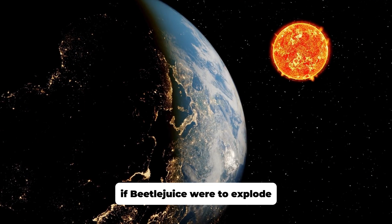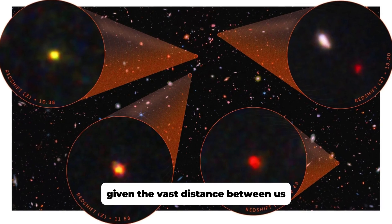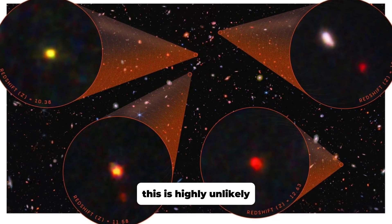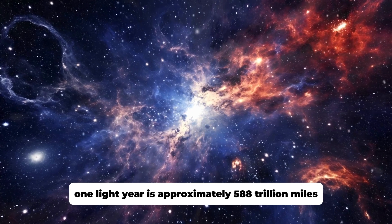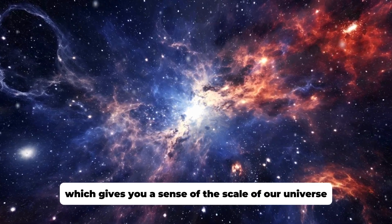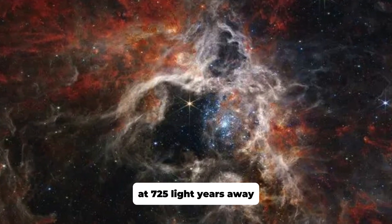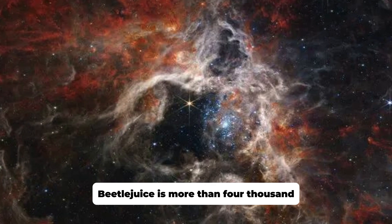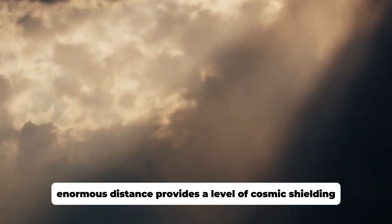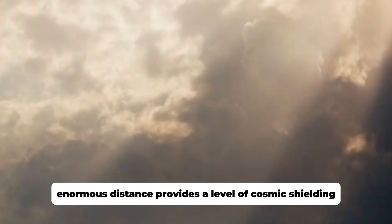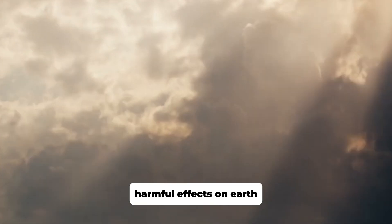But what could happen on Earth if Betelgeuse were to explode? Is our planet in danger? Fortunately, given the vast distance between us, this is highly unlikely. One light year is approximately 588 trillion miles, which gives you a sense of the scale of our universe. At 725 light years away, Betelgeuse is more than 4,267 trillion miles from Earth. This enormous distance provides a level of cosmic shielding, making it extremely unlikely that the explosion would have any direct harmful effects on Earth.